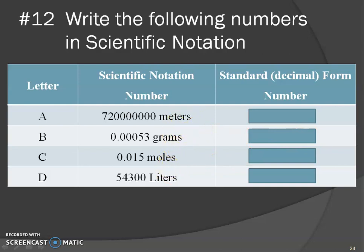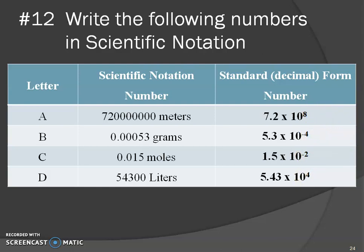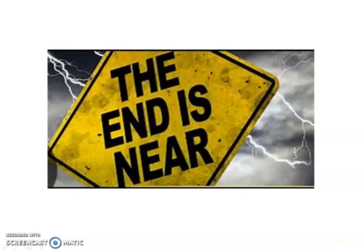Now take the standard form numbers — meters, grams, moles, and liters — and write them in scientific notation. I forgot to switch the labels, so I'm not going to remake the video, but you can figure it out: these are standard form numbers and you're writing them in scientific notation. The answers are: a positive exponent, a negative exponent, a negative exponent, and a positive exponent. Make sure you understand where to put the decimal — the number before the decimal must be between one and nine, and you don't have to include extra zeros. You have one more section to complete in the summer packet.